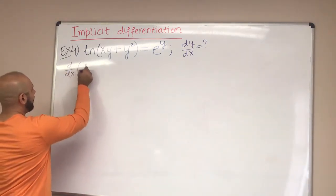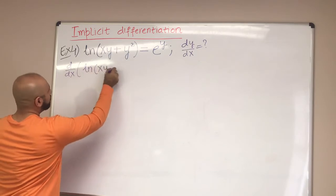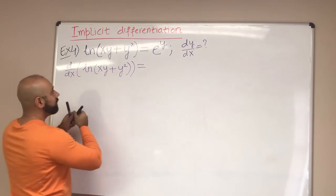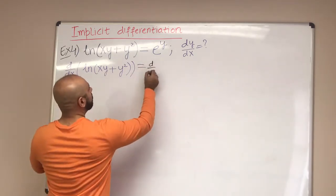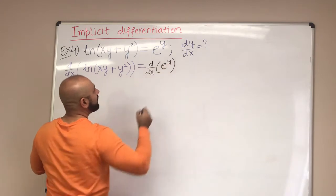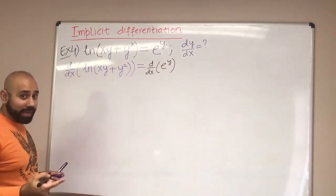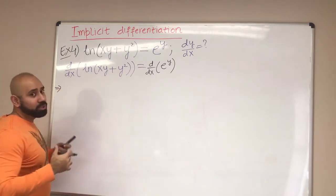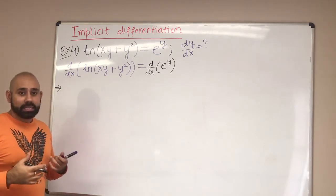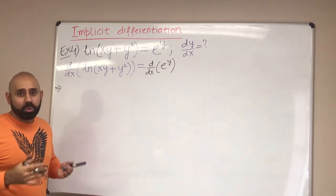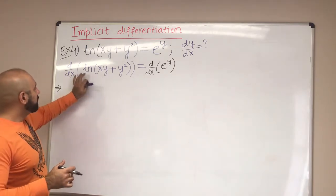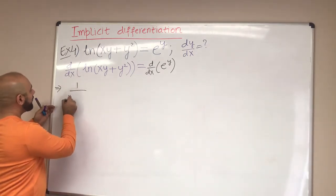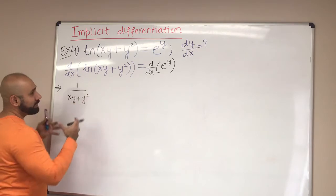Applying the derivative on both sides, we have d/dx of ln(xy + y²) on the left-hand side, and d/dx of e^y on the right-hand side — keeping in mind y is in turn a function of x. For the log function, the derivative starts as 1 over the argument, so we write 1/(xy + y²). That is the basic derivative of a log function — it is the inverse of whatever is inside the parentheses.